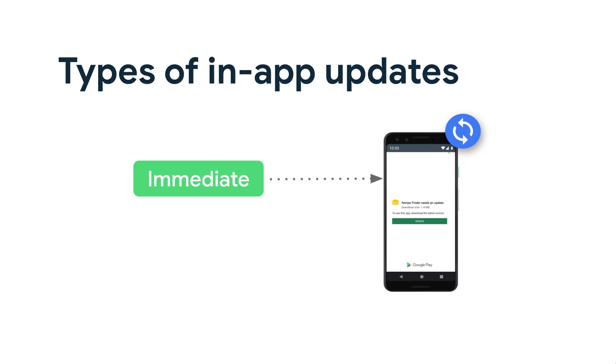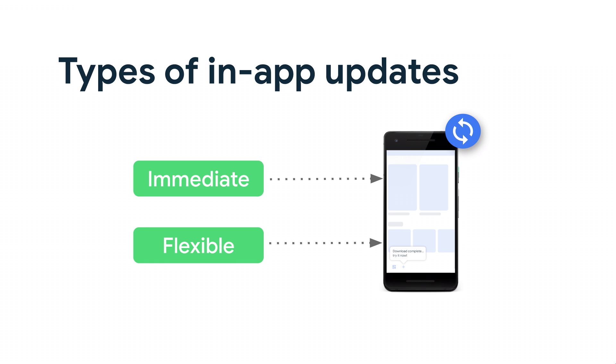There are two ways to show in-app updates. One is an immediate flow, where when the user clicks to update, the rest of the UX is completely managed by the Play library — the easiest way to integrate. But if you want more control over the UX, you also have the flexible flow. Here, when the user chooses to click update, control is returned to the app, and the user can continue using the app while the update downloads in the background. When the download is completed, the Play library informs the app, which can then choose an appropriate time to tell the user to complete installation.